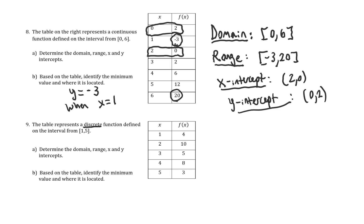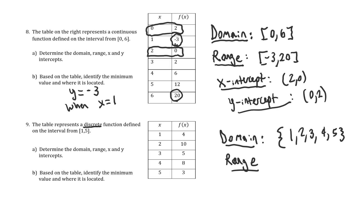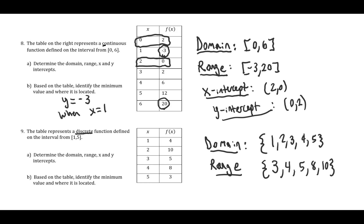Problem 9 involves a discrete function, meaning these points are the only points on the graph — it wouldn't be connected like in problem 8. For a discrete function, we just list the domain values: {1, 2, 3, 4, 5}. For the range, we list the Y values in ascending order: {3, 4, 5, 8, 10}. Notice the difference — a continuous function uses an interval, while a discrete function uses a list of values as a set.